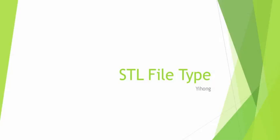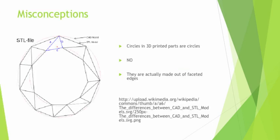Welcome to episode 19. This week I'll be talking about STL file formats. To start off this episode, I want to address a misconception. When you're 3D printing and you want a circle, what you actually get is not really a circle — they're made out of faceted edges, as you can see from the image shown. This is because your CAD model does have a circle, but when you convert it into the STL file format it becomes a faceted edge instead.